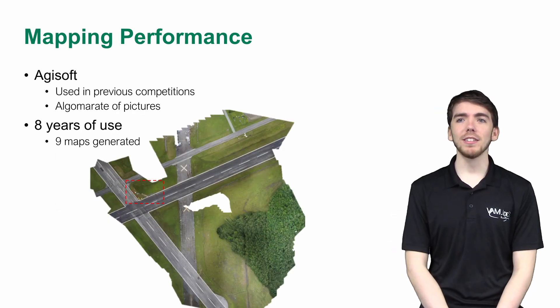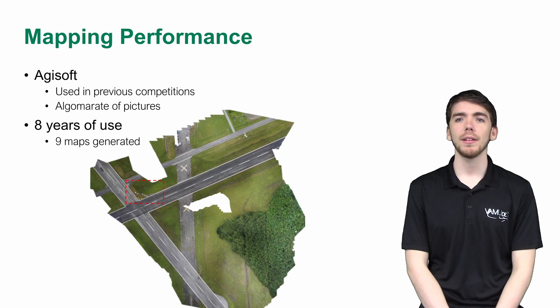For the mapping task, the team plans to use Agisoft. With Agisoft, we are able to take the pictures received through our imaging system and create a 2D orthomosaic map. The software does this by first aligning the pictures and creating a 3D mesh of the area. It can then stitch the pictures together to create a complete high-resolution map.